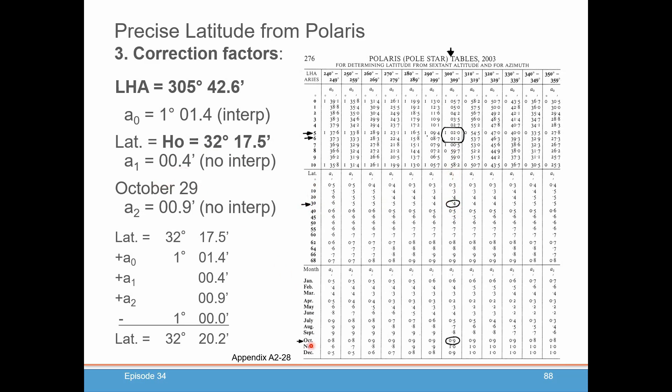And then finally down at the bottom, you want to record the month. And again, no interpolation. Don't think, well, we're almost at the end of October, so I should be looking somewhere else. Don't do any of that. I'm in October. Use the number in the row for October. Again, you're staying in that same column. And that says that A2 is 0.9, and you record that.